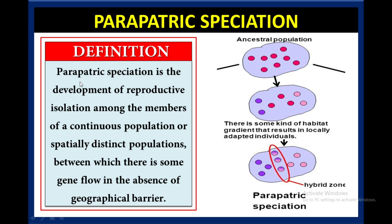Basically, parapatric speciation is the development of reproductive isolation among the members of a continuous population or spatially distinct population between which there is some gene flow in the absence of a geographical barrier.